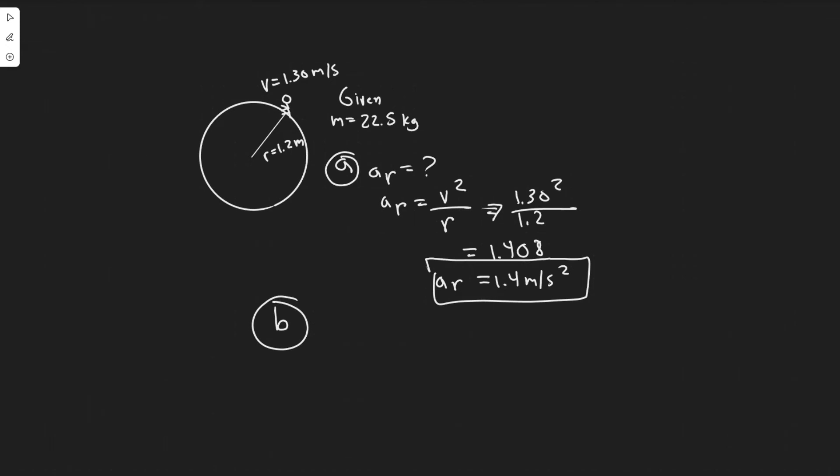Let's move on to B. So for B, they're asking net horizontal force, and so they're basically talking about the centripetal force. So to calculate that, F sub C equals M A sub r. So centripetal force equals mass times the centripetal acceleration.